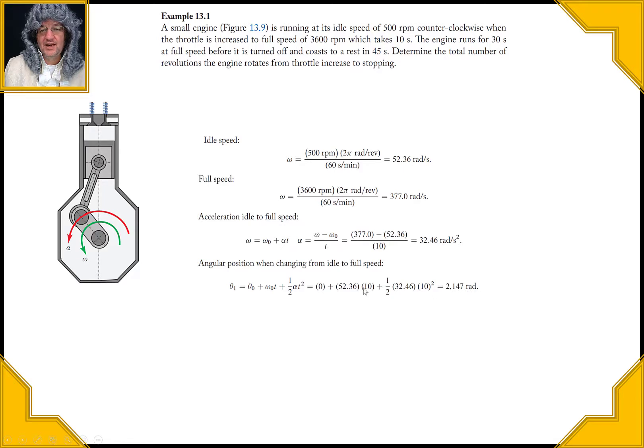And we find that it had moved 2,147 radians, right. The angular position after it's been running at full speed, right, so we could say now we know that it's going at omega, right, so that was going to be a constant speed at 3600 RPM for 30 seconds, right.